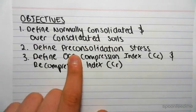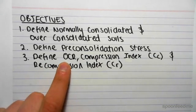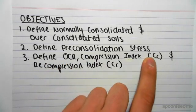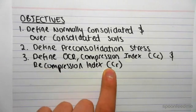We're going to be defining the pre-consolidation stress, and we're going to be defining OCR, which is the over-consolidated ratio, the compression index, which is C subscript C, and the recompression index, which is C subscript R.